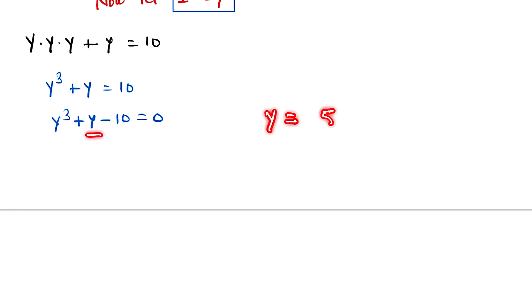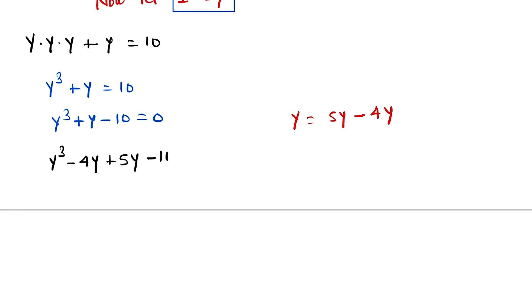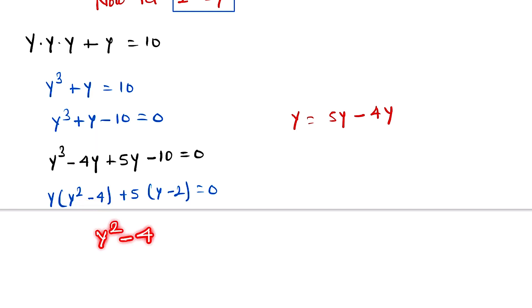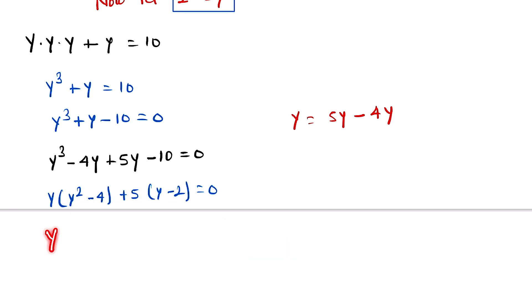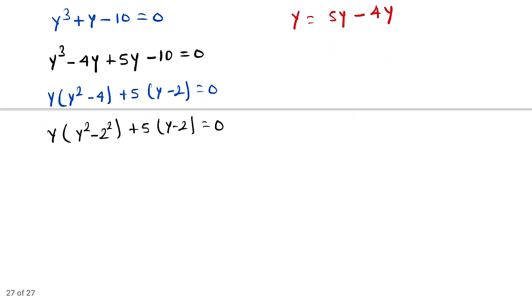To factor this cubic, we split the middle term: y can be written as 5y − 4y. So the equation becomes y³ − 4y + 5y − 10 = 0. Taking y as a common factor from the first two terms gives y(y² − 4), and 5 is common from the last two terms giving 5(y − 2).